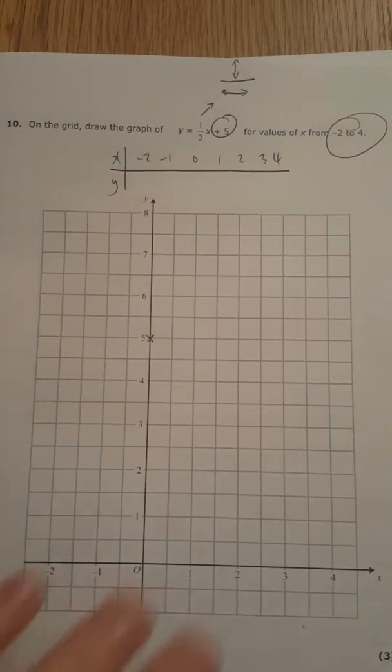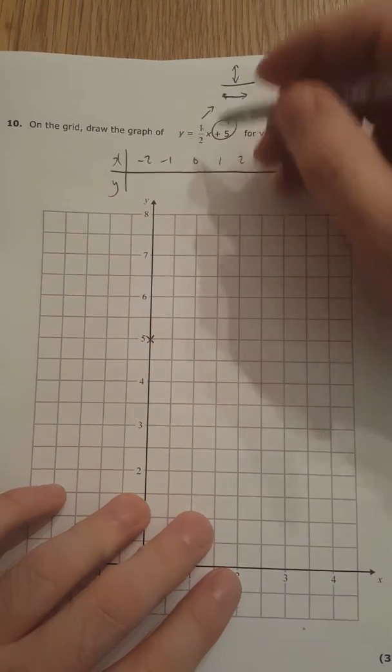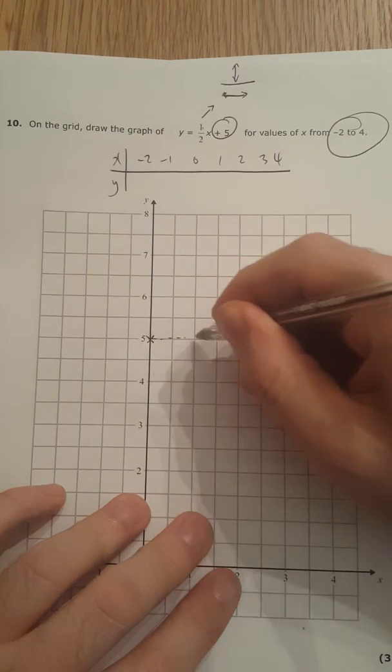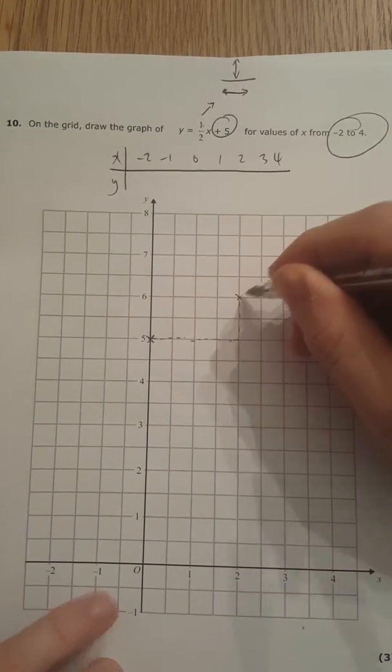So I'm going to go along 2, up 1. So along 2, nice dashed lines, up 1, there. And I'm going to do it again.